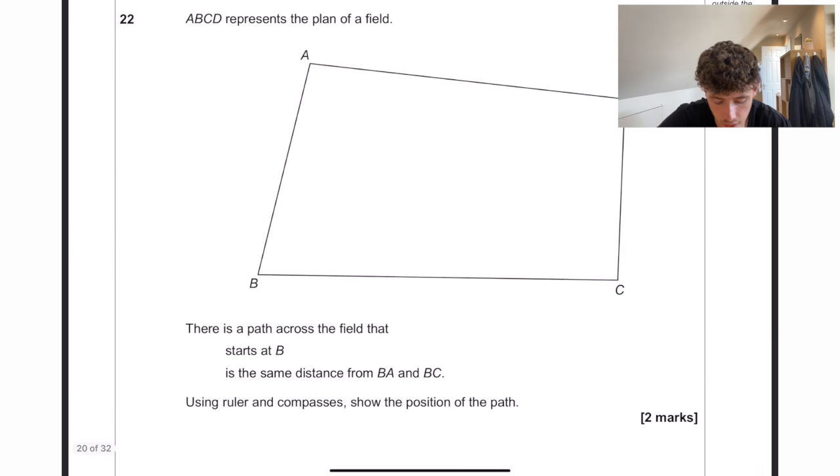ABCD represents the plan of a field. There is a path across the field that starts at B and is the same distance from BA to BC. So what we would want to do, this is a loci question, we'd want to get our compass, and I apologise I don't have a compass digitally, I can't really do it on here, but we would set our compass to a certain distance, doesn't really matter what distance, and we would do a big arc like this. You only really need the middle points here though. We would then take our pointy bit of the compass and put it on these two arcs here. And again, as long as the length reaches far enough, we want to do a mark there from the point and also put it here and do a point like that, if that makes sense. And then our line is going to go through there and that would be a perfect split between BA and BC. Let me know in the comments if you want me to explain that a bit further because it's not the easiest of topics. So that would be the position of the path.